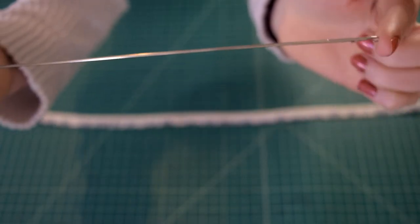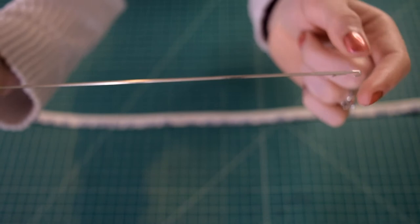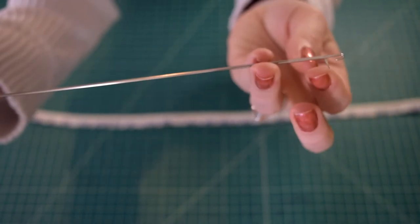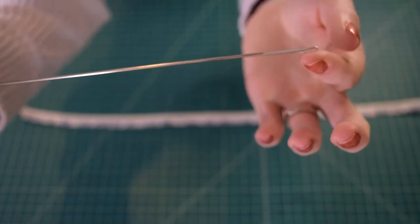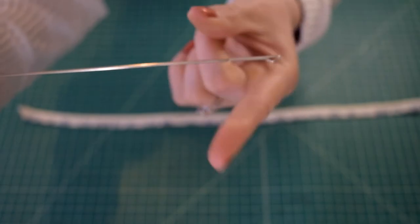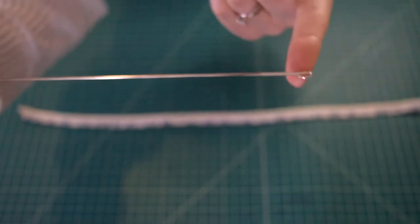And then once you hook the hook into your fabric at the top and start pulling the tube back the other direction, then this little piece is going to close as you pull it this direction so that it will stay closed and not get stuck in your fabric.